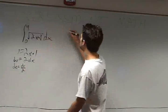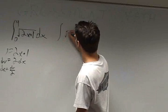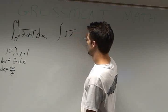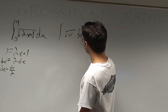We're going to substitute that into the integral. We get the integral of square root u, du divided by 2.